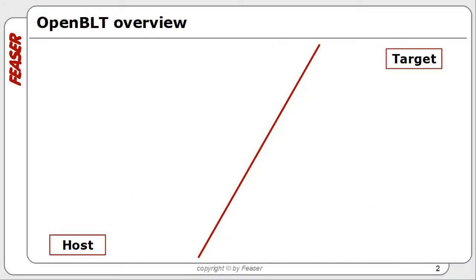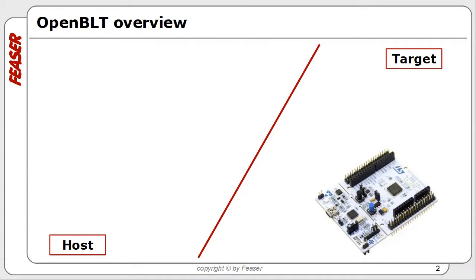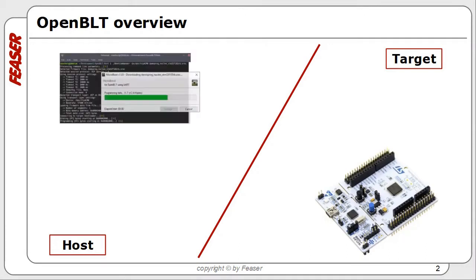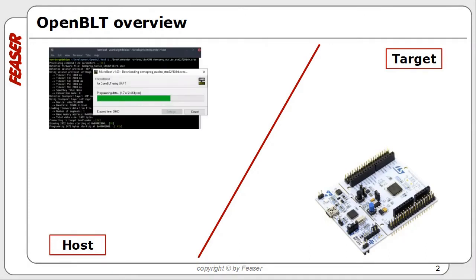The OpenBLT bootloader package consists of two parts: the actual bootloader running on the microcontroller target, and the firmware update tools on the host PC.